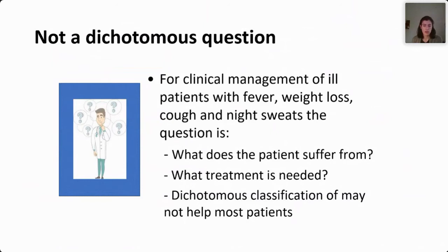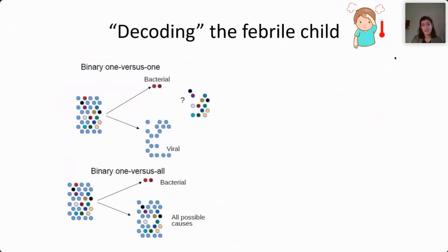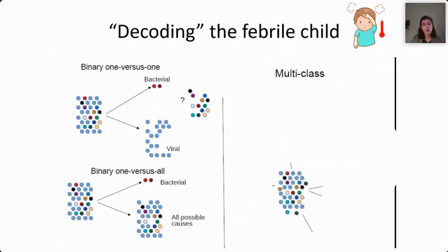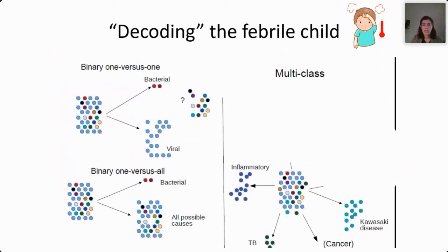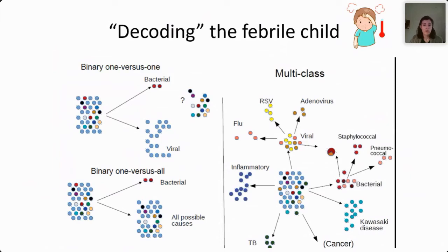You have multiple causes of fever that you have to consider when a patient is in front of you. We're trying to move away from a binary way of phrasing questions to a more multi-class approach, where having a patient in front of us and measuring the genes expressed in the blood, we can classify them into different groups — for example TB, an inflammatory condition, Kawasaki disease, viral and bacterial infection, but also co-infection, and down to the level of specific pathogen.